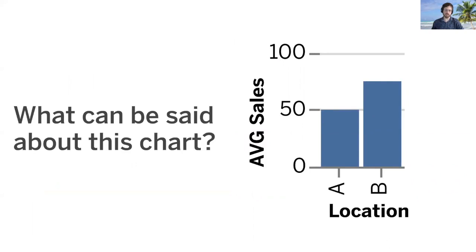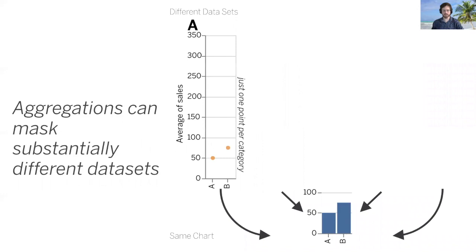What can we say about this humble bar chart? It appears that location B has about 50% more sales than location A. Is the store in location A underperforming? Well, given the magnitude of the difference, I bet your knee-jerk answer would be yes. Yet the reality of the situation can be much more complex.